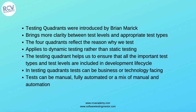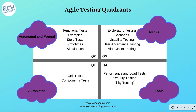Let's look at how the testing quadrant is defined and what the key test levels and types are within it. As you can see in this image, there are four quadrants: Q1, Q2, Q3, and Q4. These quadrants are defined for numbering purposes only and do not signify the sequence in which testing should be done.